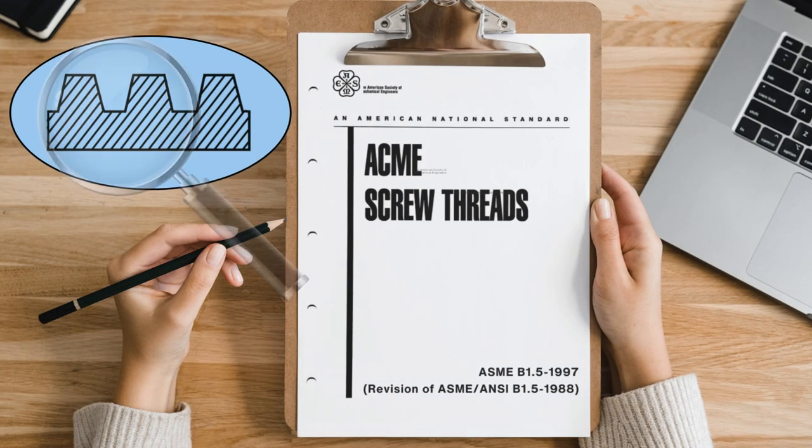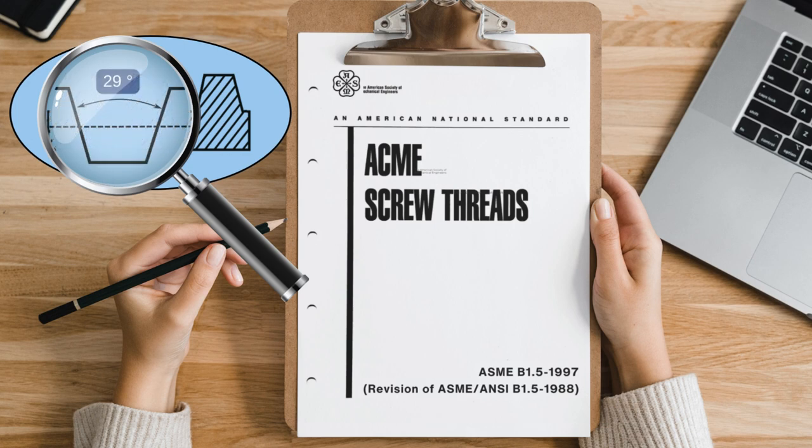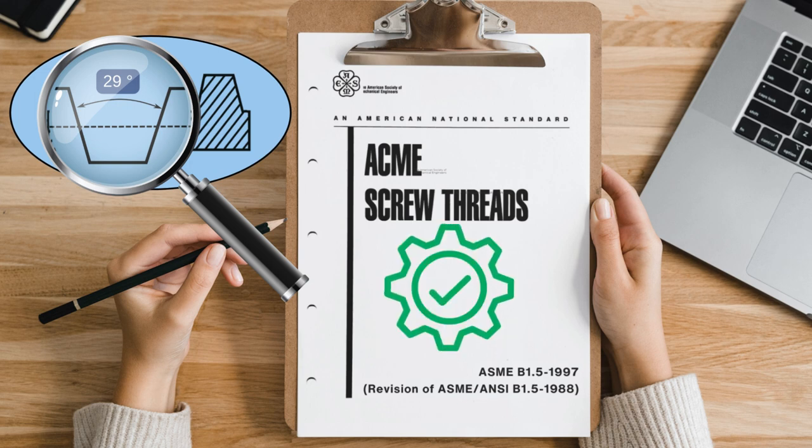ACME is a trapeze-shaped thread profile with a 29-degree V-angle, defined by ASTM B1.5. It is the most popular thread used for traversing linear motion, due to its ability to withstand large loads and ease of manufacturing.